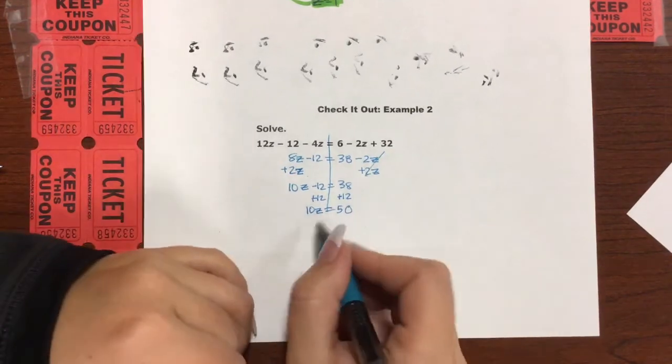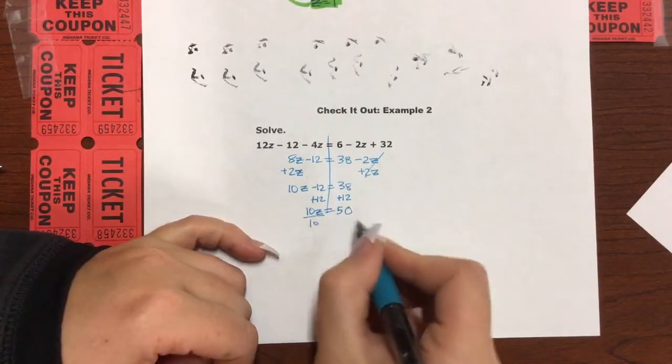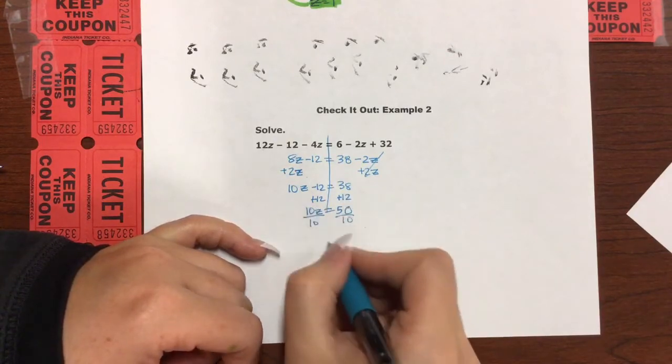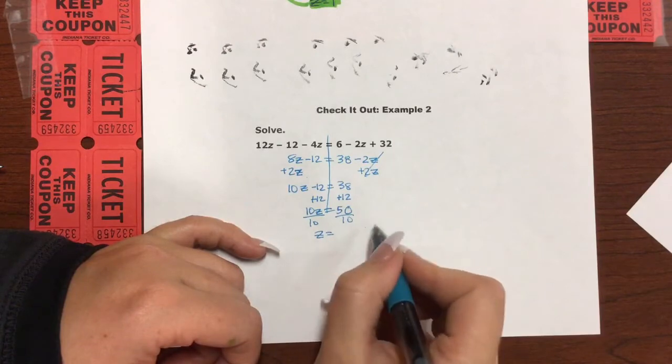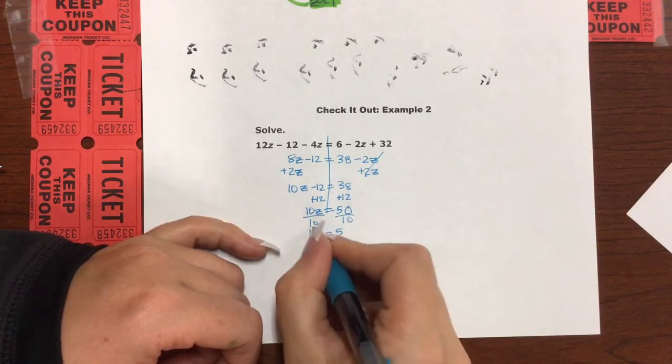And then we have to do a little bit of division property of equality. 10 divided by 10 is 1. 1 times z is z. Z equals 50 divided by 10, which is 5. All right.